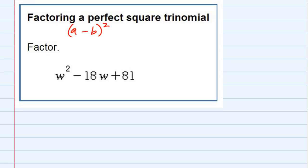The first one is (a - b)² which gives us a² - 2ab + b².